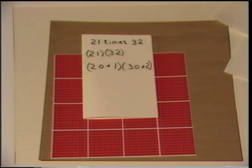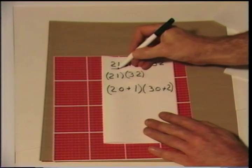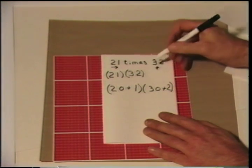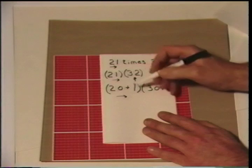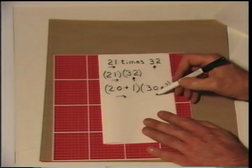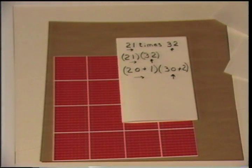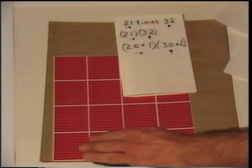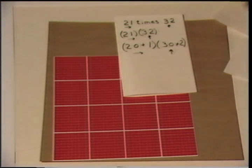Let's do this multiplication problem — 21 times 32. We have the one name of the rectangle: over 21, up 32. We wrote it longhand: over 20 plus 1, up 30 plus 2. We need to come over 20 plus 1 and come up 30 plus 2.